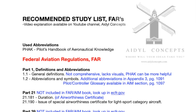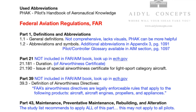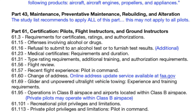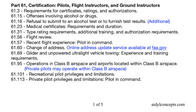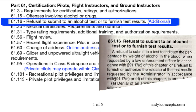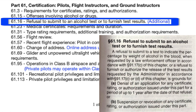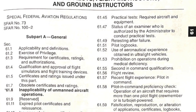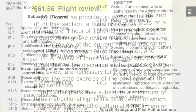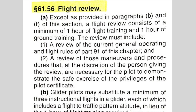Next we come to part 61, where you can independently look up regulations for your own study and reviewing needs. I will focus more on added comments and tips. Skipping ahead to 61.15, it's about offenses involving alcohol or drugs. I also added 61.16 right after that because it's very closely related to 61.15 and makes understanding this topic more complete. Part 61 also includes information about flight reviews, found under part 61.56.